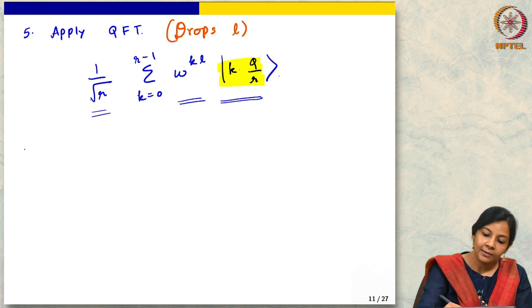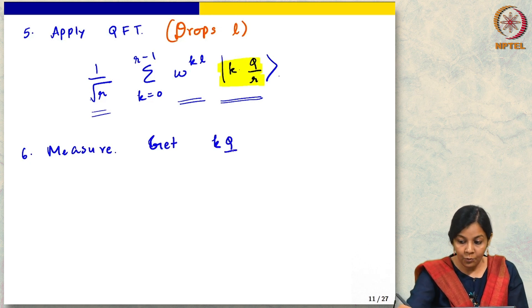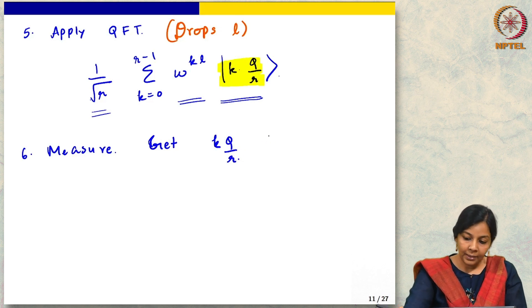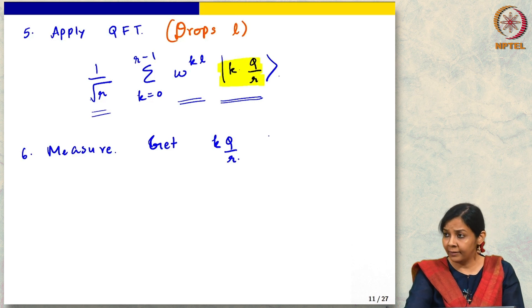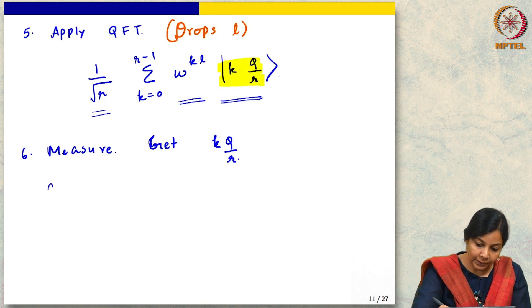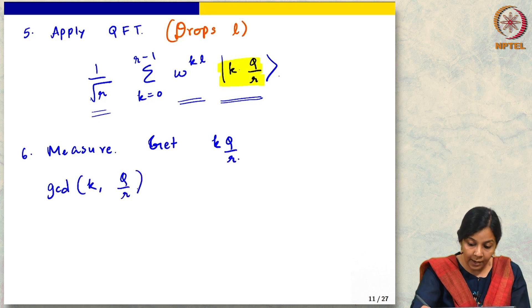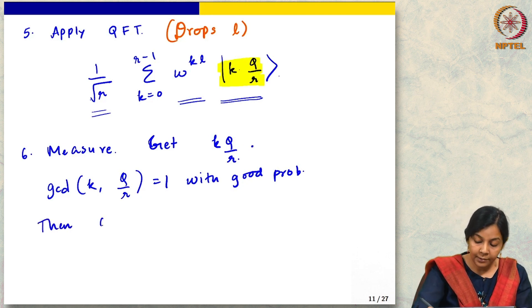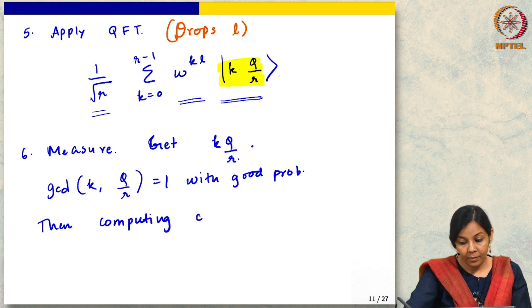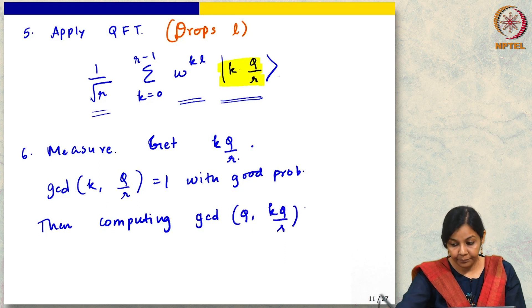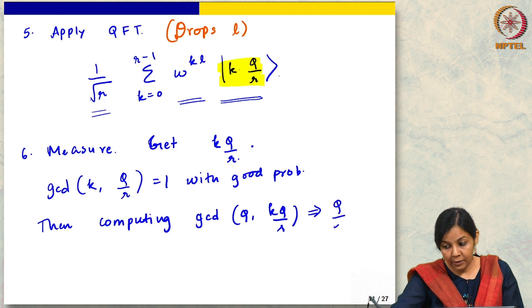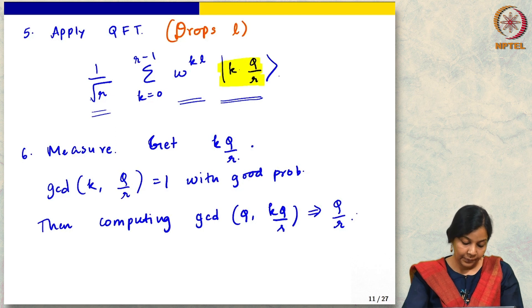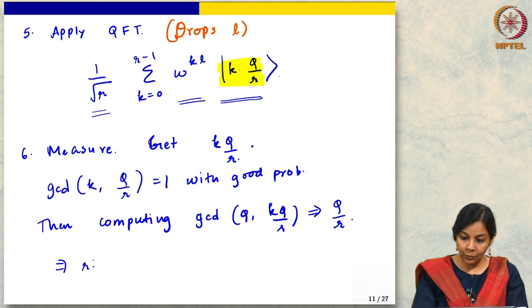We get something like this, and that is it. Now we measure. Now that we measure, we are going to get some k Q over R. Now remember that we assumed that R divides Q. In this case, we assumed that you can also check that GCD of K and Q over R is going to be 1 with good probability. I am not proving this again, I am just saying it. Then computing the GCD of Q with k Q over R should give us Q over R, and this in turn gives us R because we know Q.